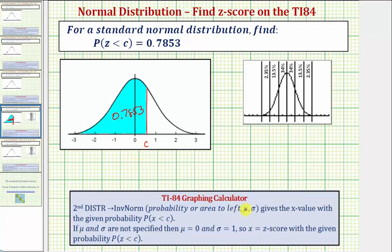Then we enter the mean or mu, followed by the standard deviation or sigma. This function returns the x value with the given probability, the probability of x being less than c. However, if we let mu equal zero and sigma equal one, x will be the z-score with the given probability of z being less than c, which is the case we have here.